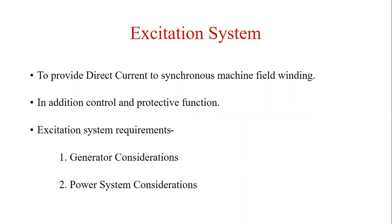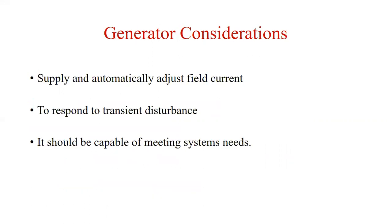Let us start with the requirements of the excitation system, which will be divided into two parts: first is the generator considerations and the other is the power system considerations. The basic requirement is that the excitation system supply and automatically adjusts the field current of the synchronous generator to maintain the terminal voltage as the output varies within the continuous capability of the generator.